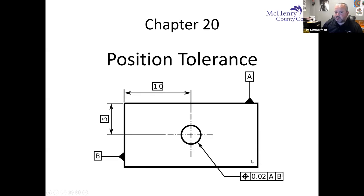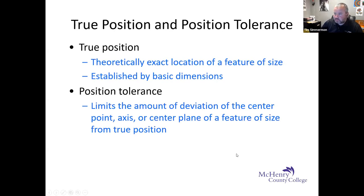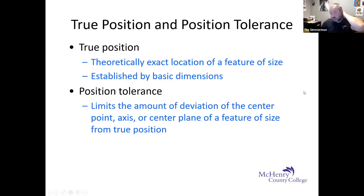Some hardcore GD&T folks — before I learned a lot about GD&T — I would call this 'true position.' True position actually has a different meaning in geometric dimensioning and tolerancing. True position is the theoretically exact location of the feature of size — where the hole is drilled, the center of the hole. The true position is its theoretical position on the blueprint.